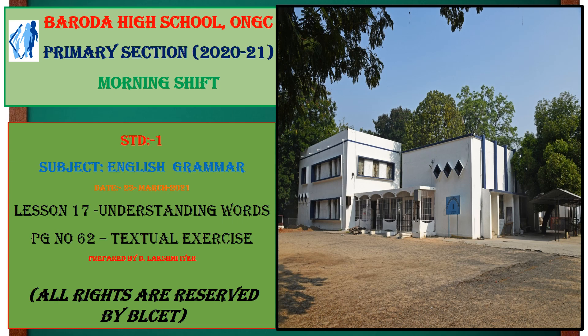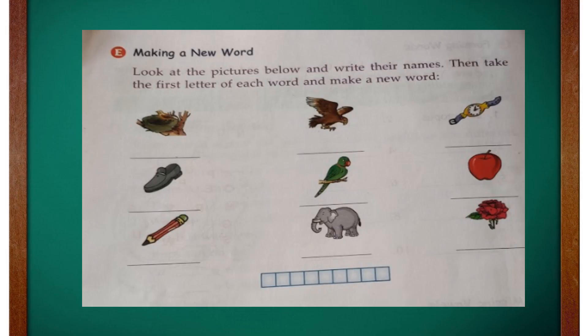Hello kids, we are going to continue the textual exercise from the listening and understanding words. We are on page number 61 of your English grammar textbook. In this exercise, we are going to make new words using the picture clues given here. Okay, let's start!